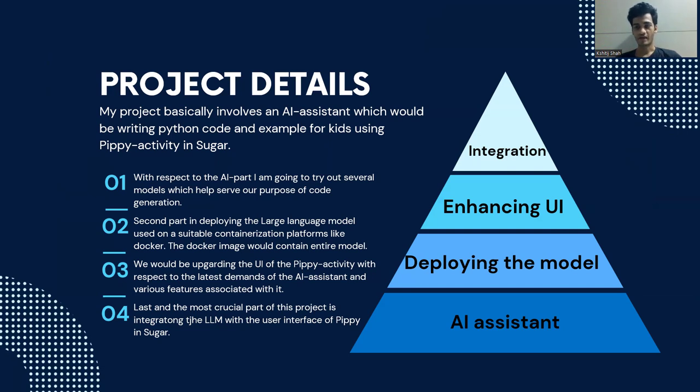The second phase is deploying those large language models on containerization websites like Docker and Docker Hub. Third would be enhancing the UI of the Pippy activity where this AI assistant is going to be deployed. And the last and one of the most crucial phases of this entire project is integration.